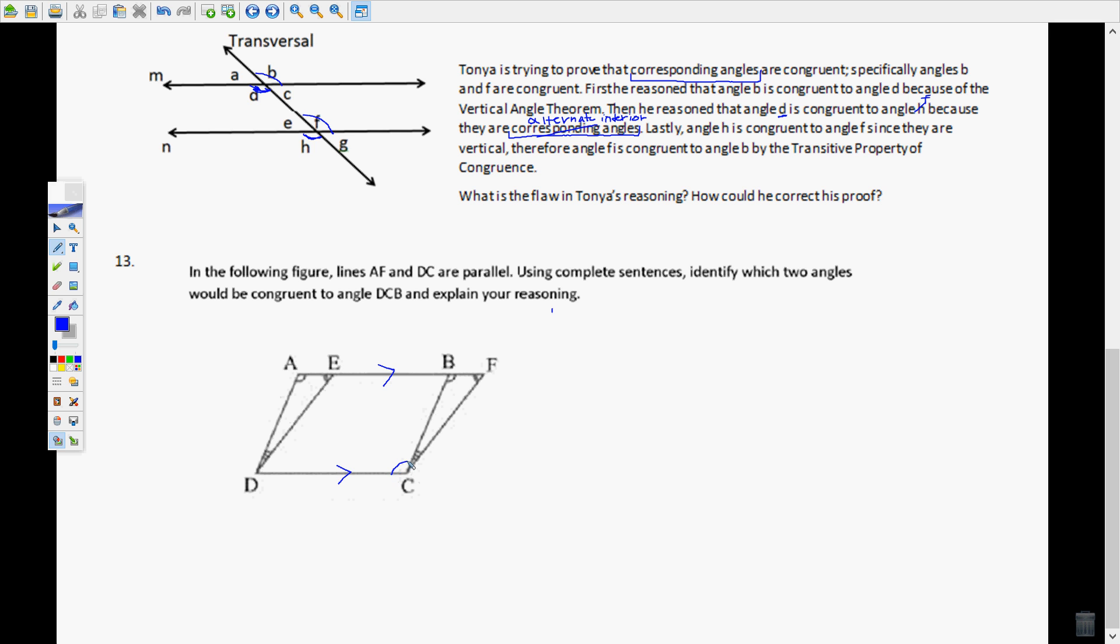So here's angle DCB. I'll just mark it this way. And explain your reasoning. And so if you look, since you have parallel lines, if you consider BC a transversal.